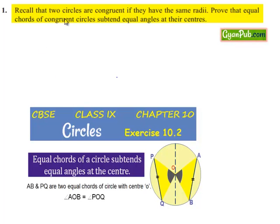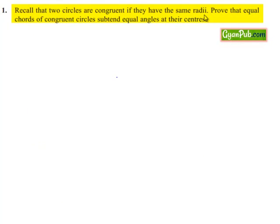Moving on to question number 1. Recall that two circles are congruent if they have the same radii. Prove that equal chords of congruent circles subtend equal angles at their centers.